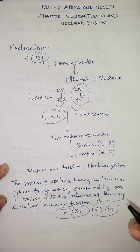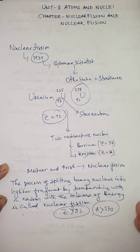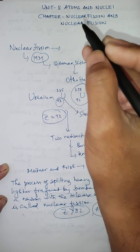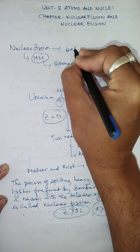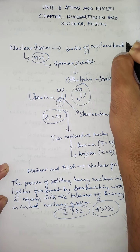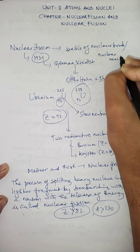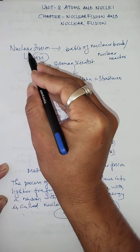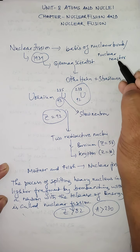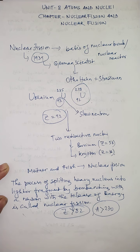The huge amount of energy liberated in the fission reaction is why nuclear fission is the basis of the nuclear bomb. Nuclear fission is also the basis of the nuclear reactor. The nuclear bomb works on the basis of nuclear fission reaction, and so does the nuclear reactor. Nuclear fission is also called a chain reaction, which can be classified as a controlled chain reaction and an uncontrolled chain reaction.